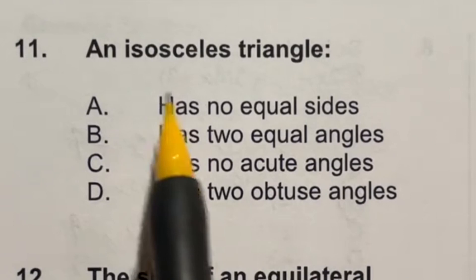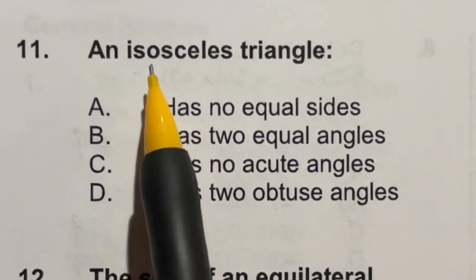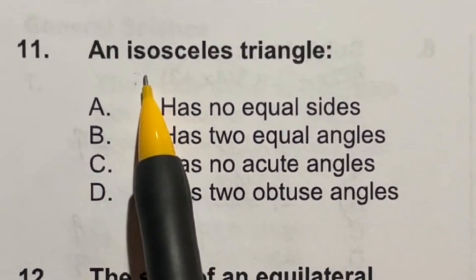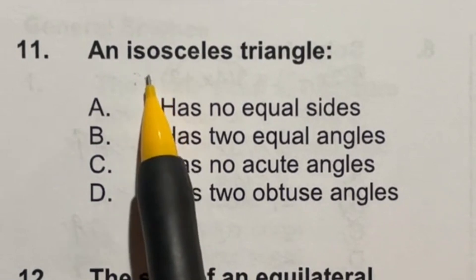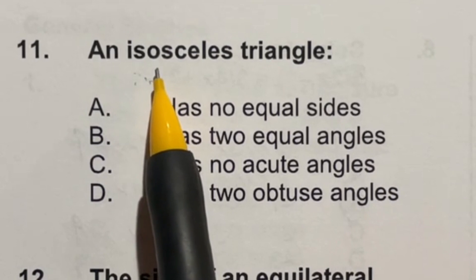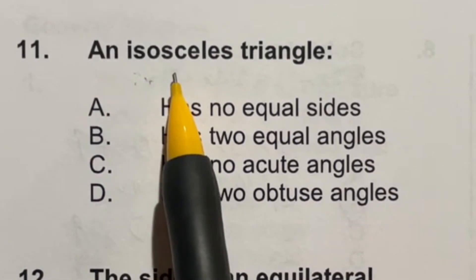So in terms of triangles, you have three major types. You have scalene, isosceles, and equilateral. Scalene means that all three sides are different lengths. Isosceles means that two of them are the same length, and equilateral means all three are the same length.